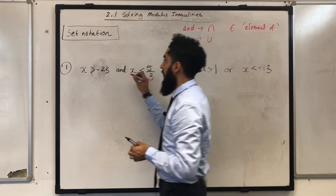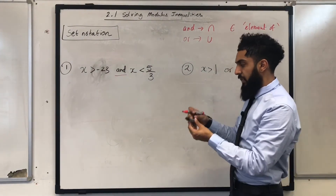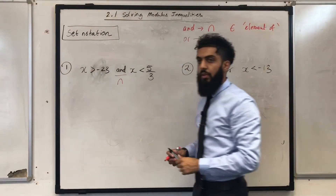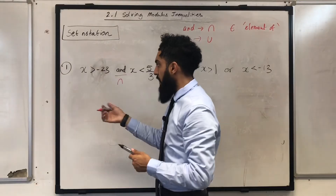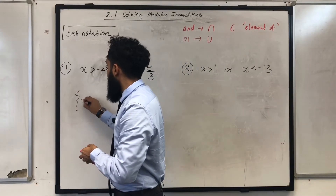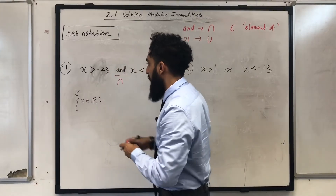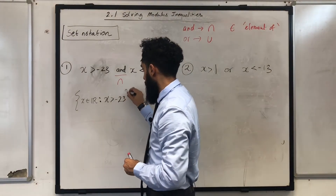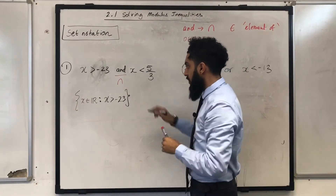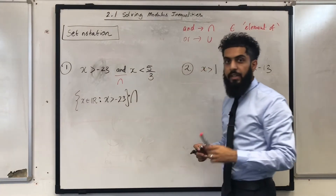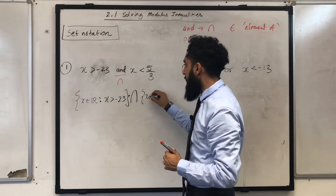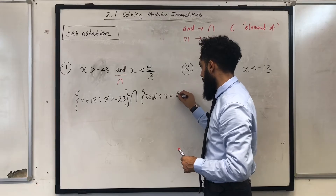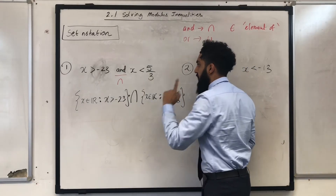For question 1, we can underline 'and,' which is used for intersection. The first inequality, x is greater than minus 23, can be replaced with: the set of x such that x is an element of real numbers and x is greater than minus 23. We replace the 'and' with the intersection symbol. The second part, x is less than 5 over 3, becomes: the set of x is an element of real numbers such that x is less than 5 over 3. That is your solution in set notation.